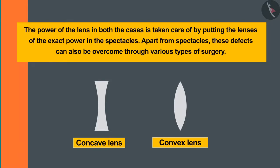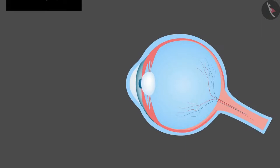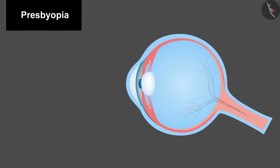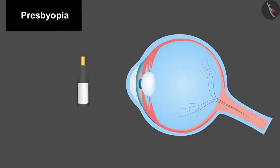The third defect which is known as presbyopia. In this defect it is difficult for a person to see both far and near. Aging is the reason behind this defect for most of the people, where both the muscles and the lens get weakened.